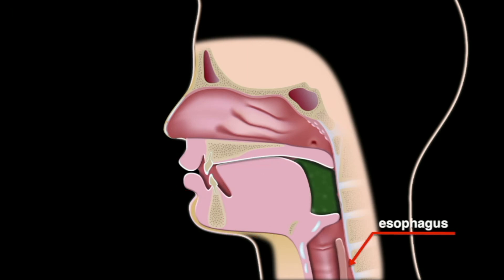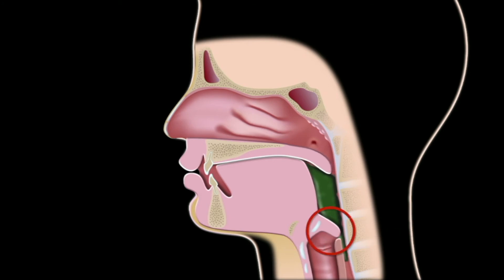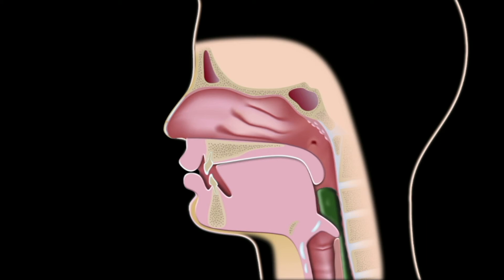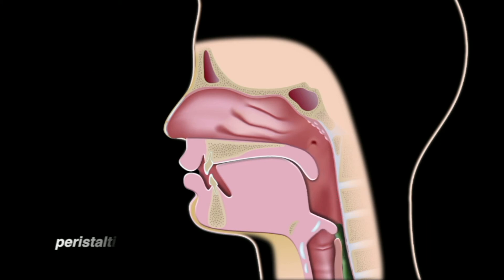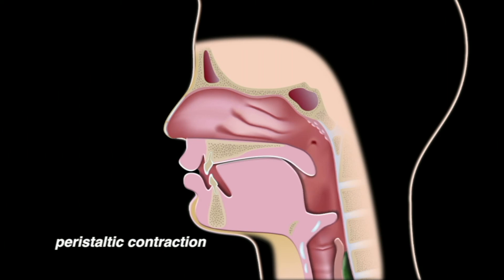The opening of the esophagus is enlarged by pulling the larynx forward and down. The epiglottis swings shut to protect the airway, directing the bolus to enter the esophagus. The bolus then stimulates a peristaltic contraction to drive its movement down the esophagus into the stomach.